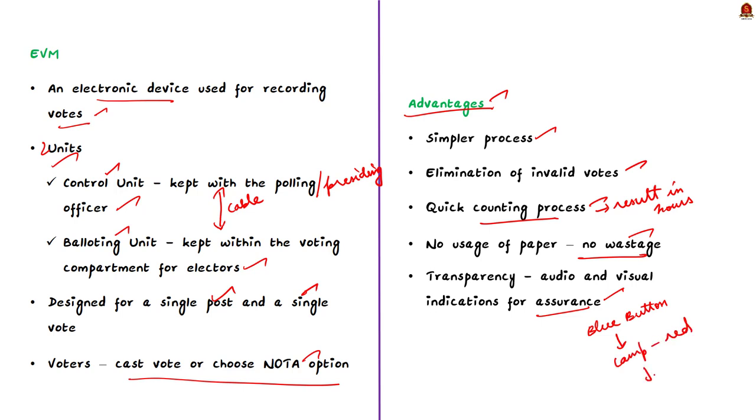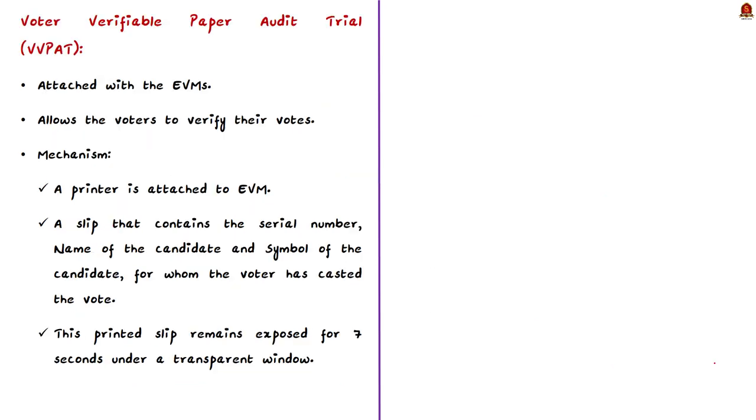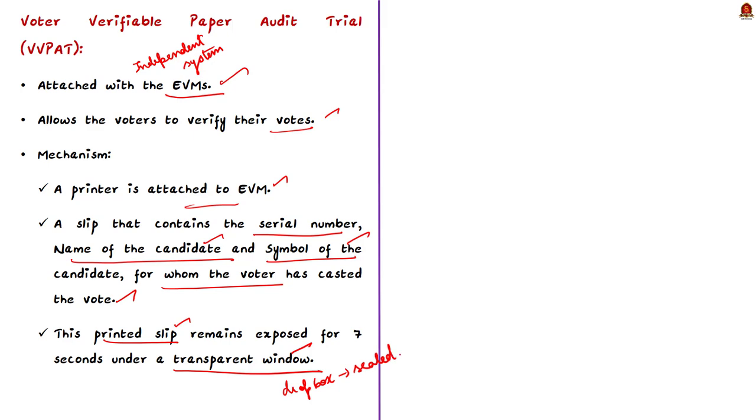This is all regarding EVMs. Now let us know some facts about VVPAT. VVPAT is an independent system which is attached to the electronic voting machines. It allows the voters to verify that their votes are cast as they have intended. A printer is attached to the EVM and is kept in the voting compartment. The printer prints a slip that contains the serial number, name of the candidate, symbol of the candidate for whom the voter has casted the vote. The printed slip remains exposed for 7 seconds under a transparent window and then gets cut automatically and falls into a drop box which remains sealed.